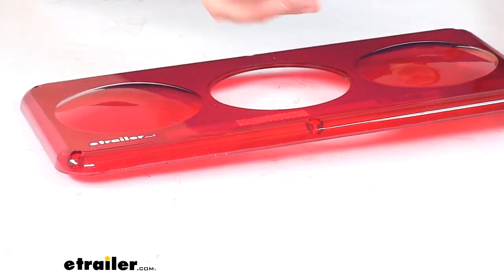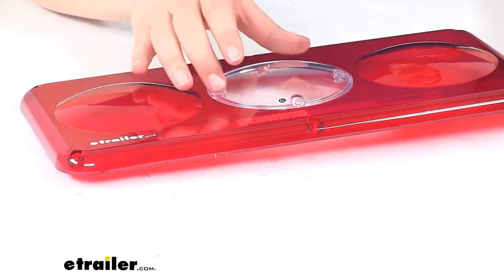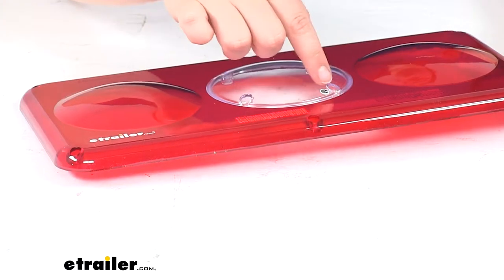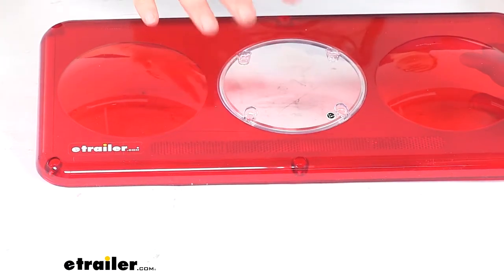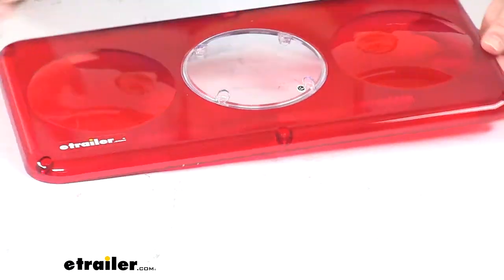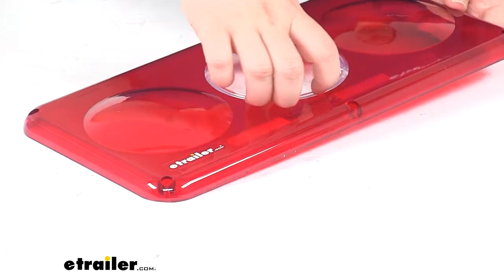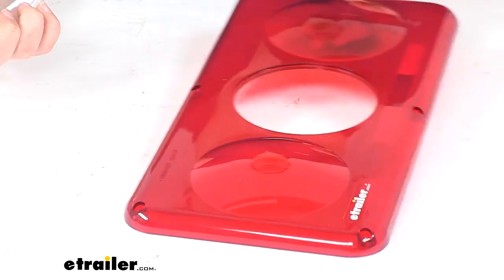You can see that groove there. This lens just sits down inside, and there are four mounting holes to connect it to the light itself. The red lens is sold separately and can be found at eTrailer.com if you need to pick that up.